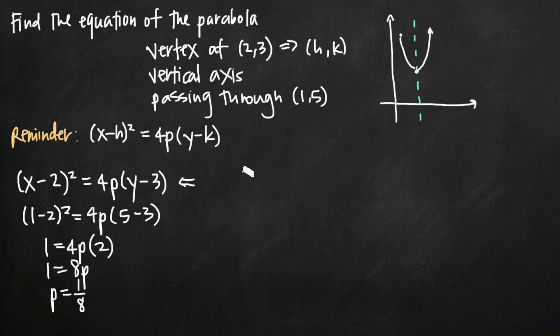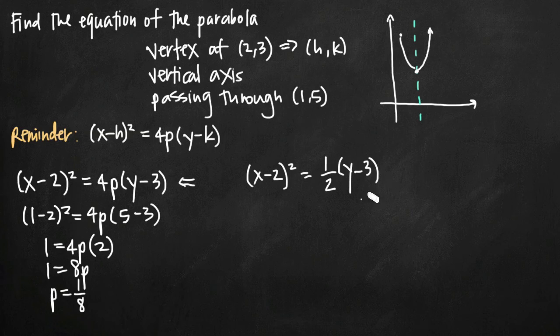And what we get is (x-2)² equals 4 times 1/8 is just 1/2, so we get 1/2 out in front here, times (y-3). And we can leave the equation in this form, but sometimes it's nice to solve for y because it's what we're used to seeing for the equation of parabola, y equals, and then something in terms of x.